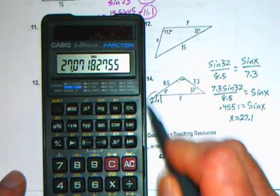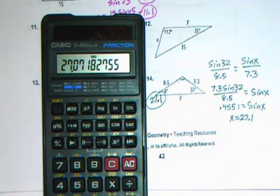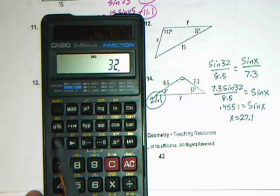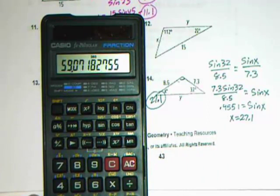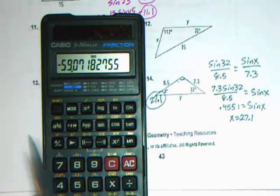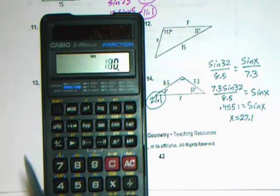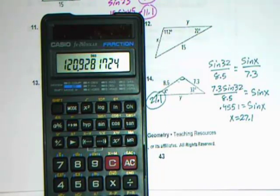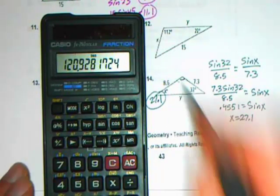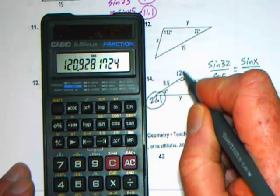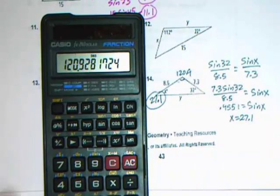Now since we've got the 27.1 and the 32, we might as well find this angle here while we're at it. So we're going to add 32 onto that, change sine and add with 180, and we get 120.9 for this remaining angle.